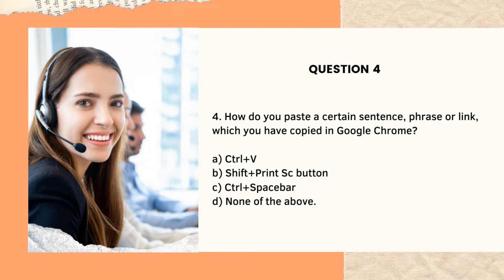Question number four: How do you paste a certain sentence, phrase, or link which you have copied in Google Chrome? After you copy something, you're going to paste it to Notepad or MS Word, for example. Letter A, Ctrl plus V. Letter B, Shift plus Print Screen. C, Ctrl plus Space Bar. And D, none of the above. The answer is Ctrl plus V. You can also do this using your mouse when you right-click, but these are the keyboard shortcuts.